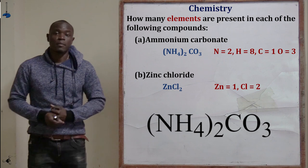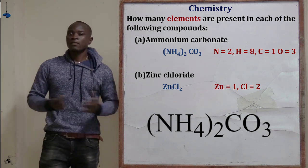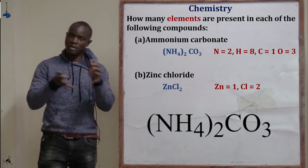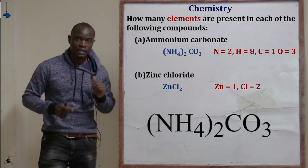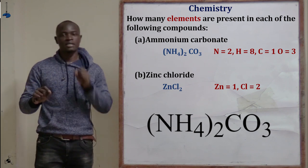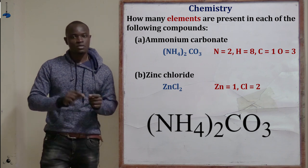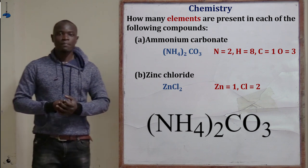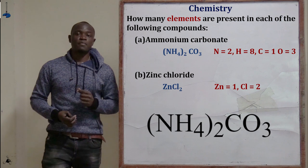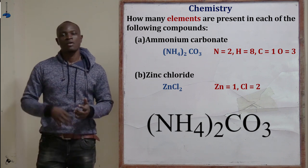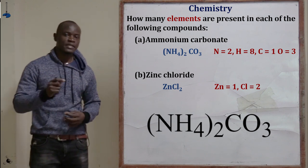So the question asks how many elements are present in ammonium carbonate, which is (NH₄)₂CO₃. The 2 outside the bracket multiplies everything inside: we get 2 nitrogen (1 × 2), 8 hydrogen (4 × 2), 1 carbon, and 3 oxygen. Therefore, the elements present in ammonium carbonate are 2 nitrogen, 8 hydrogen, 1 carbon, and 3 oxygen.